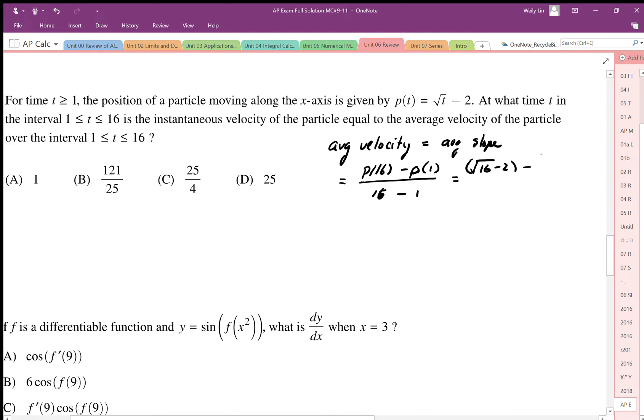That's going to be square root of 16 minus 2 minus square root of 1 minus 2. The minus 2s cancel out, and that's all over 15. So I end up with square root of 16 becomes 4 minus 1, so 3 over 15.